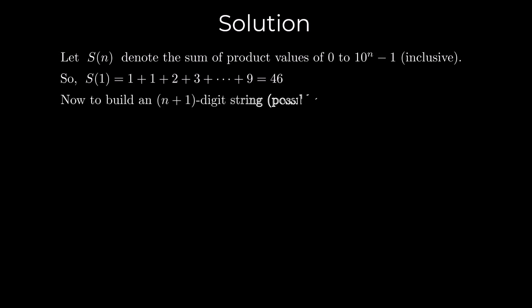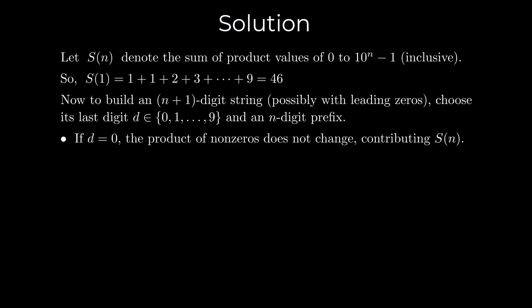Now to build an n plus 1 digit string, possibly with leading zeros, choose its last digit d and an n digit prefix. If the last digit is 0, the product of non-zeros does not change, contributing S(n).